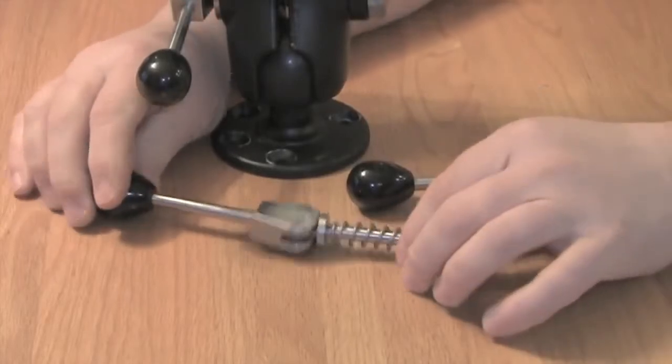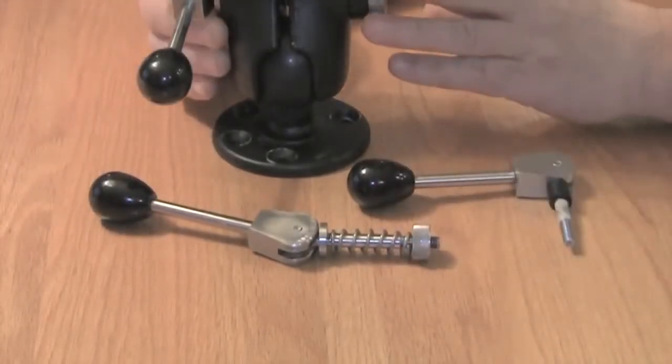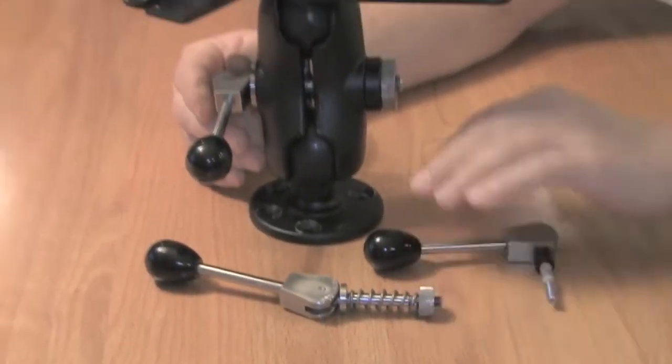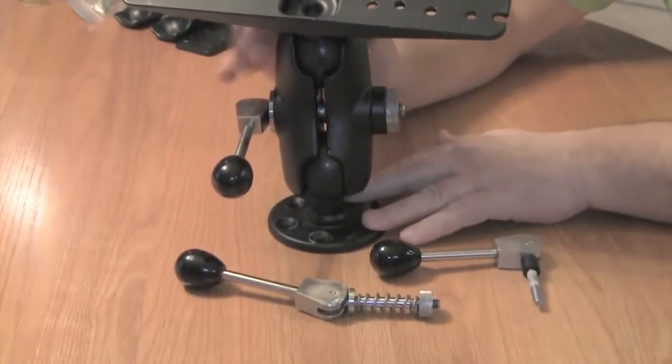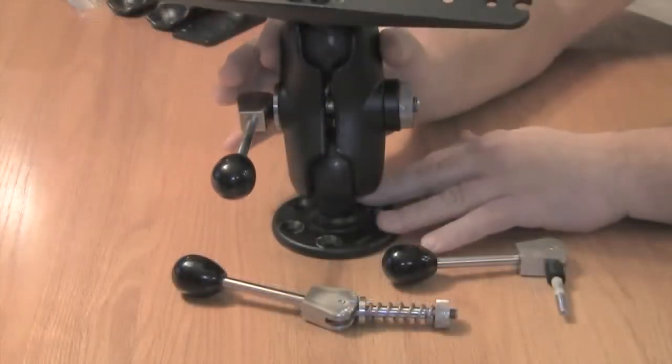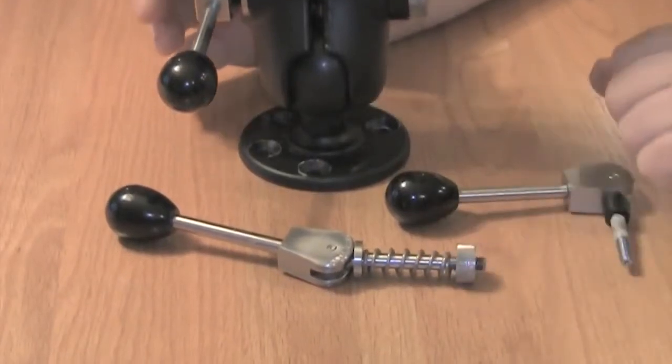For your RAM mount now, what we've done, we've replaced all your existing hardware on your RAM mount. The only thing we are keeping, obviously, is your ball and sockets, your socket arm, and your factory spring that comes with your RAM mount.